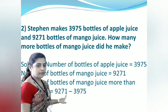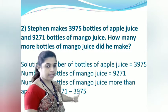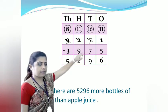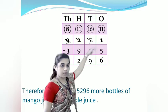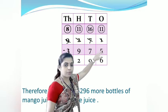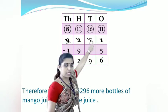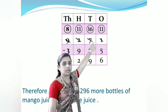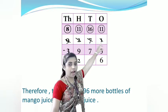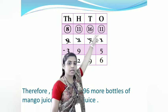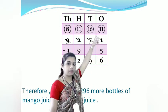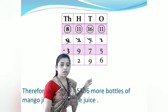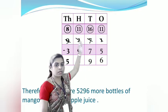So let's subtract 9,271 minus 3,975. Begin from the ones place. 1 minus 5 is not possible, so take a borrow from the next higher place. The 7 in the tens place reduces by 1 to become 6. 1 borrow means 10, added to 1 gives 11. 11 minus 5 is 6. Now the tens digit is 6, but we cannot subtract 7 from 6, so take a borrow from the next higher place.